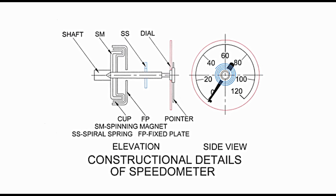The speedometer is another gauge on the dashboard, conveying the speed at which the vehicle is moving. It has been used as standard equipment since 1910. It has a dial and a pointer, and there is a cable to turn the speedometer mechanism. Referring to the diagram that presents constructional details of the speedometer. The shaft on the left, shown in elevation, is a flexible shaft connected through gears at the rear of the transmission. It rotates as per the motion of the vehicle and is connected to a spinning magnet SM.